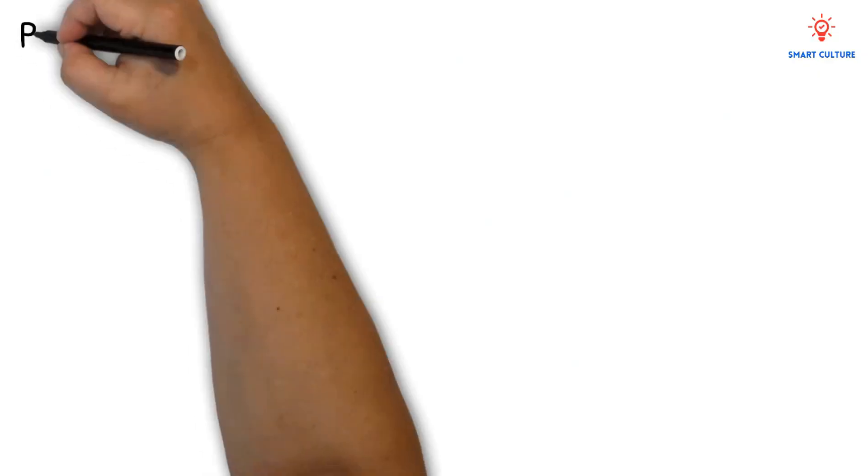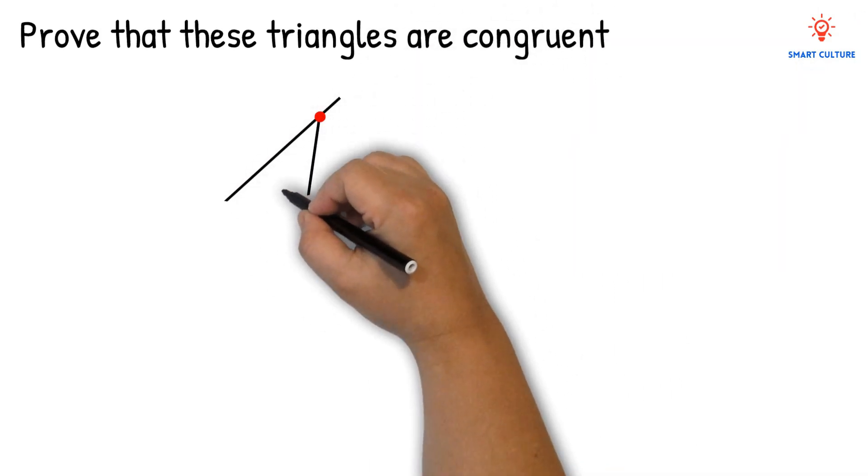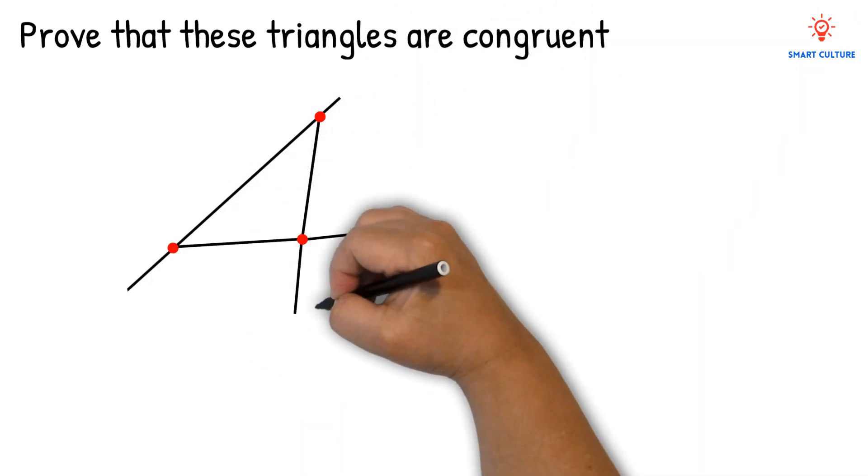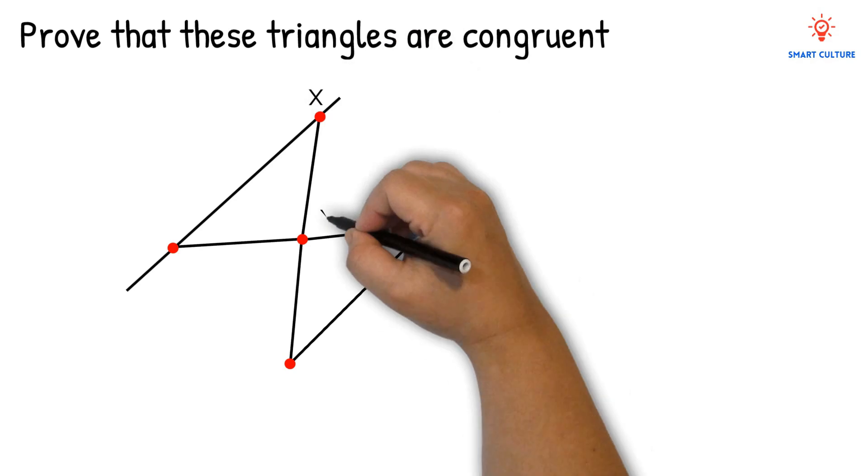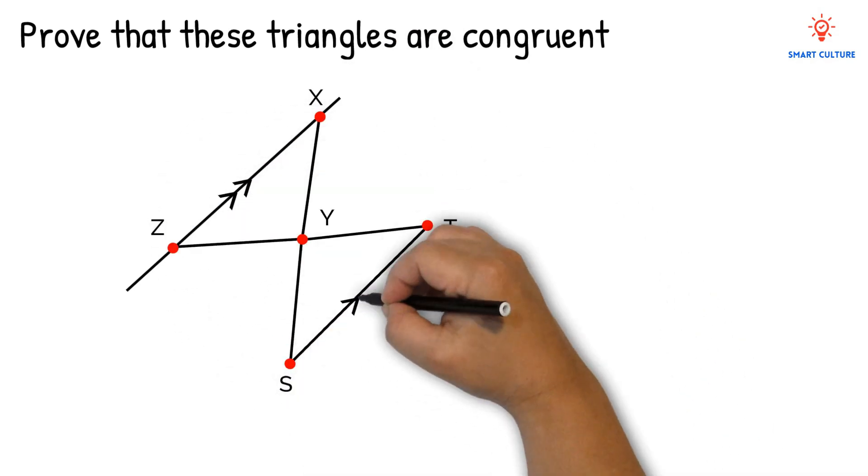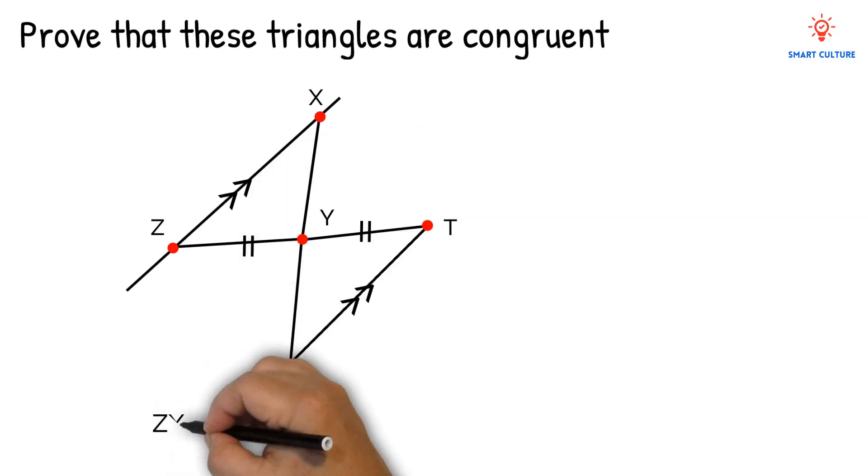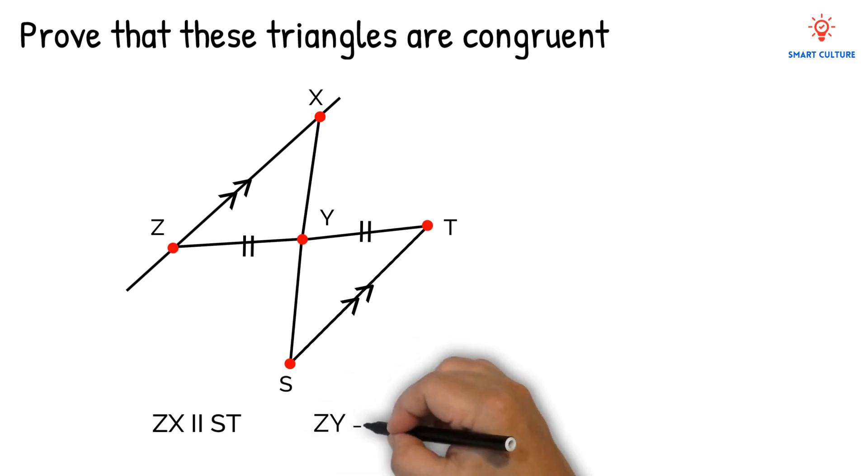In this video, we are going to prove that these triangles are congruent. Here we have triangle XYZ and triangle TYS. They have given us the following information: ZX is parallel to ST and ZY equals YT. Can we prove that these triangles are congruent?